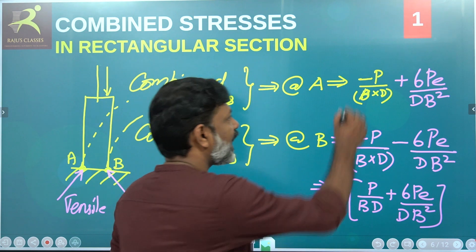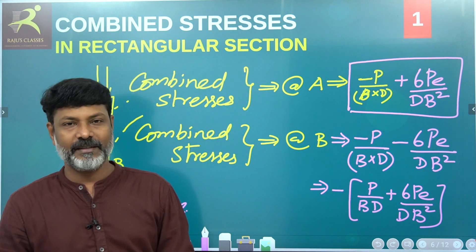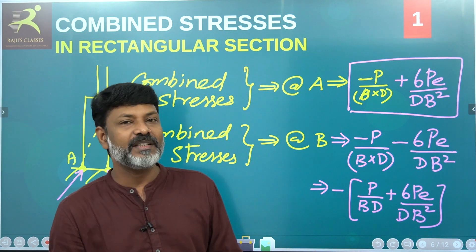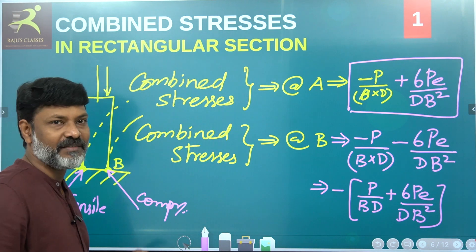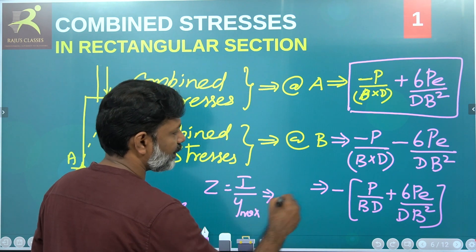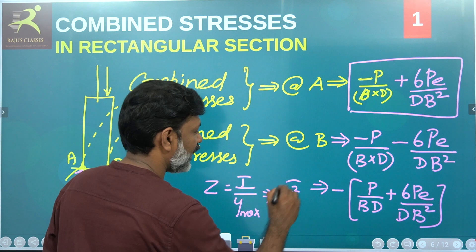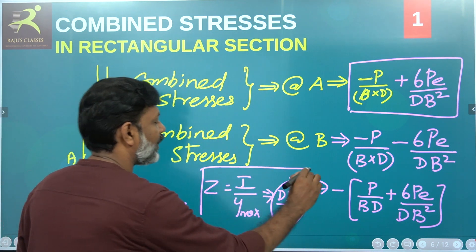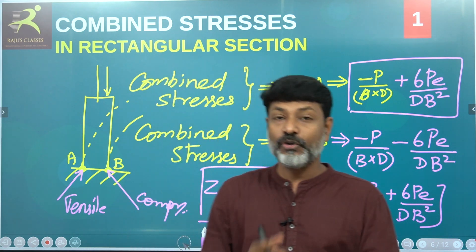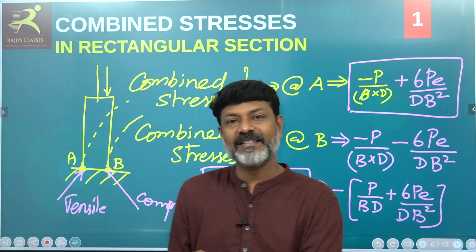That is very important — this is P by B·D·A. The combined stresses involve bending and direct stresses. The section modulus Z equals I divided by Y, where Z equals d·b² divided by 6 — this is the section modulus formula. For the combined stresses, there is one direct stress and one indirect bending stress — at the A-side and B-side, at each edge.